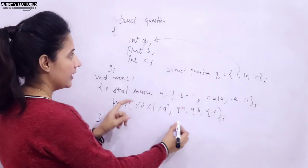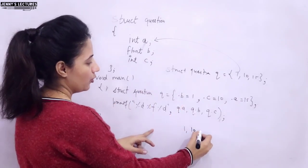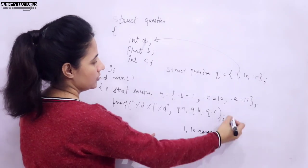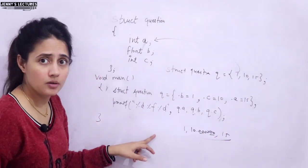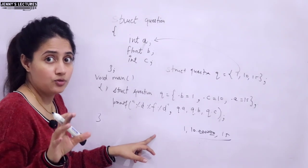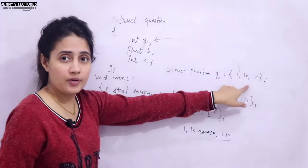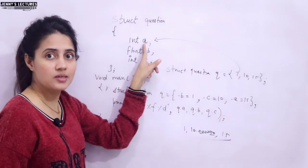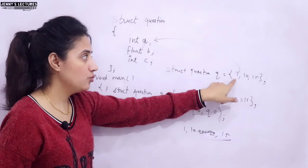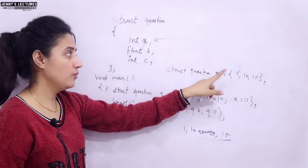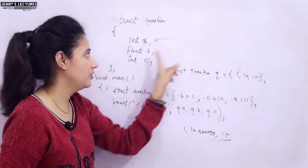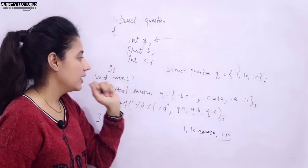And when you will print, you will get what output? 1, 10 point, 10 point, this float. So 6 zeros and then C is 15. Right. Because I have told you, whatever you will give here the values, that these values would be assigned in the order. Whatever the first member, the first value would be assigned to this member only. So 1 would be given to this A, 10 would be to this B and 15 to this C.